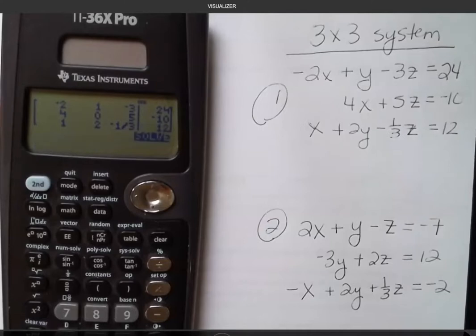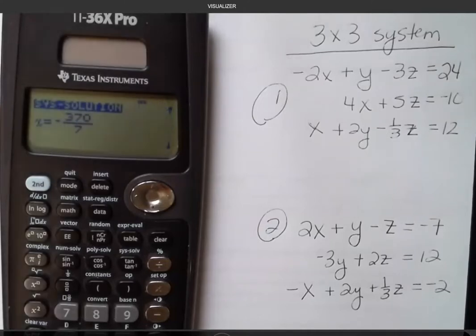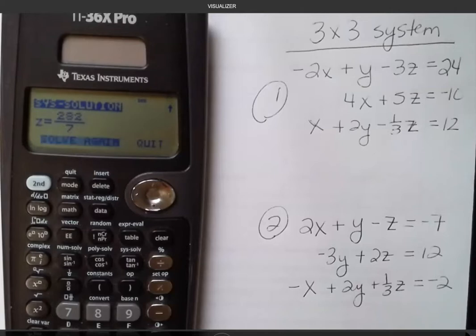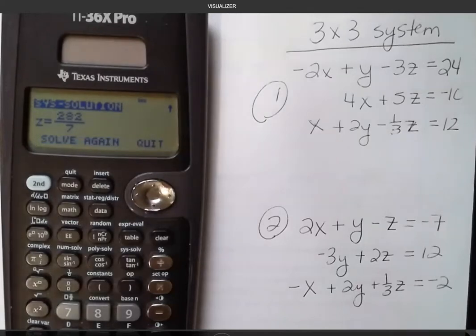And just hit enter to get down to solve and enter again, and it's going to show you. I told you this was really messy. X is negative 370 over 7. Hit enter again to see the y value and enter again to see the z value.